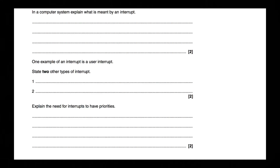The next question: in a computer system, explain what is meant by an interrupt. One example of an interrupt is a user interrupt. State two other types of interrupts. Explain the need for interrupts to have priorities. You can pause the video now and have a go at these.